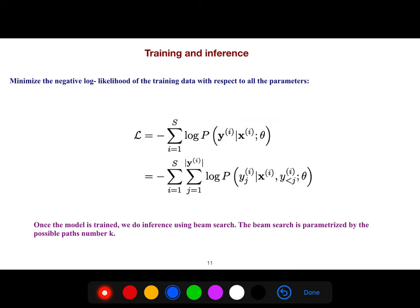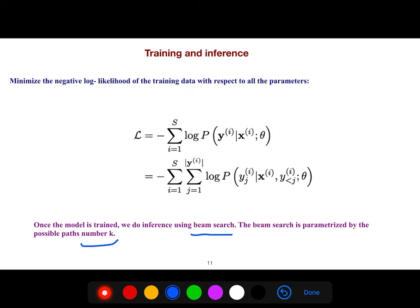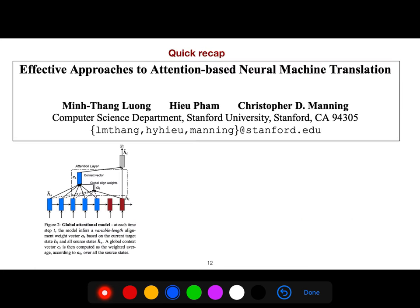And then we need training. As usual, we just use the negative likelihood of training data. So once the model is trained, we do inference by beam search. And the possible path number should be K, for example. And so I explained that, I explained this, this approach, which uses attention, but there are two types of attention, global attention and local, which is the topic of this article.